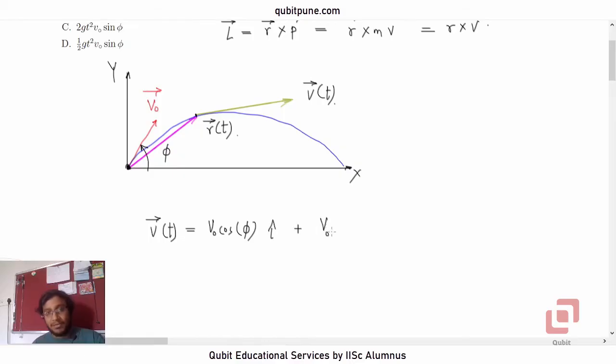It will not be constant because it will continuously change with time. So it will be V naught sin phi minus gt. Simple expressions for uniformly accelerated motion. V is equal to u plus a. This is also now going to be our momentum vector.